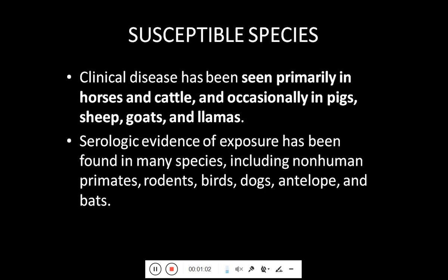Coming towards the susceptible species of vesicular stomatitis, the disease has been seen clinically primarily in horses and cattle, and occasionally in pigs, sheep, goats and llama. Serological evidence of exposure has been found in many species including non-human primates, rodents, birds, dogs, antelope and bats.